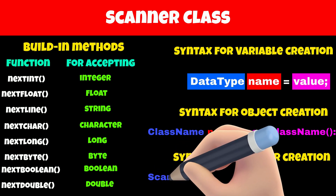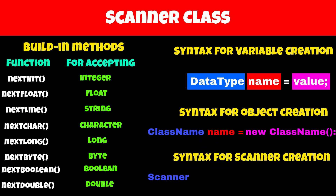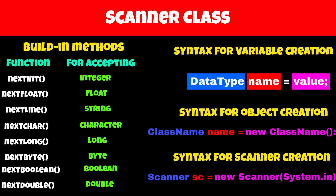Now let's build an object of the Scanner class. First comes the name of the class, which is Scanner. Then comes the name of the variable, which we will keep as sc. Then comes the equal sign followed by the constructor. The constructor requires a value to build the object — in our case, we will take input from the system's keyboard, so we pass System.in into the constructor. The full syntax is: Scanner sc = new Scanner(System.in).